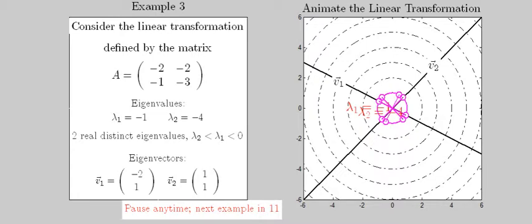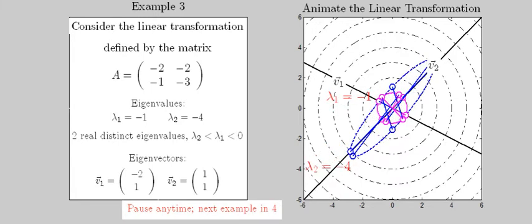The next example has two distinct real and negative eigenvalues. The image is reversed in both eigenvector directions, more so for the dominant eigenvalue, negative 4.